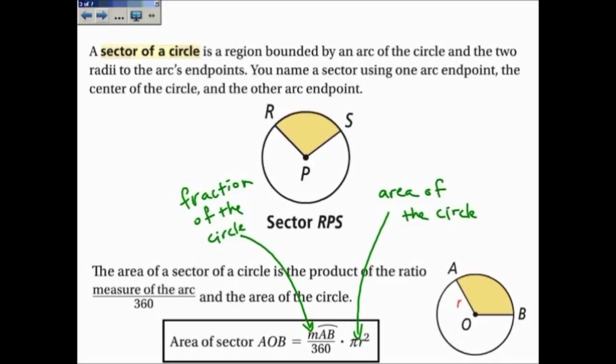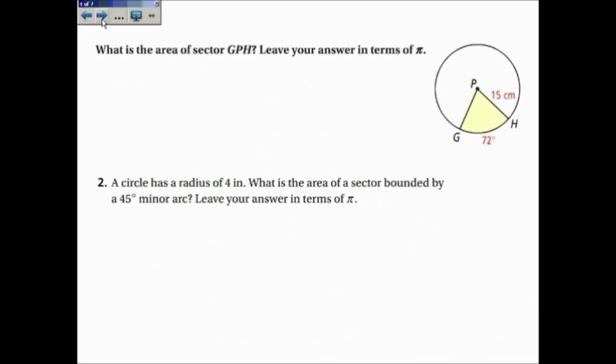Now this formula reminds me a lot of the arc length formula, where you have a fraction of the circle times the circumference. The only difference now is that instead of multiplying by the circumference, we're multiplying by the area of the circle.